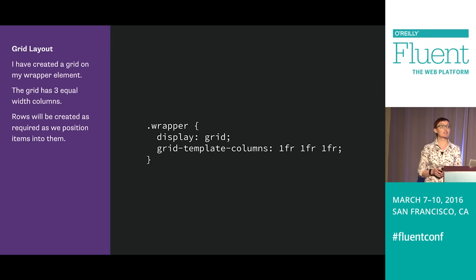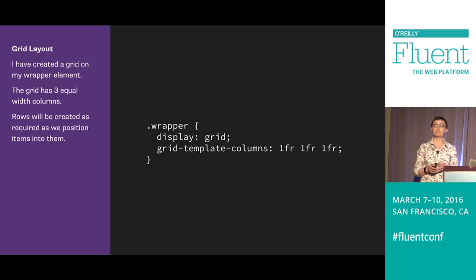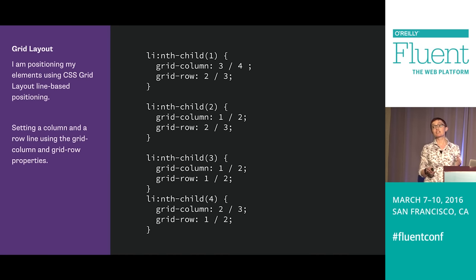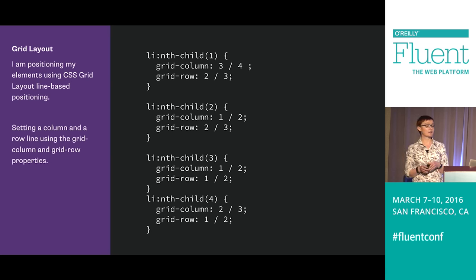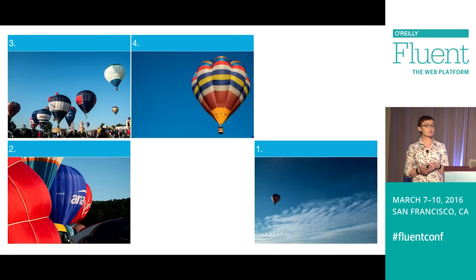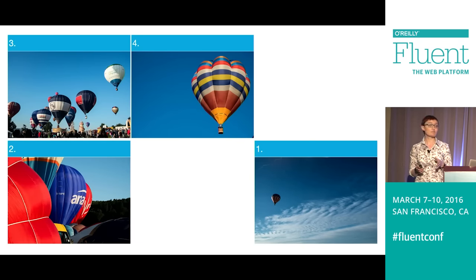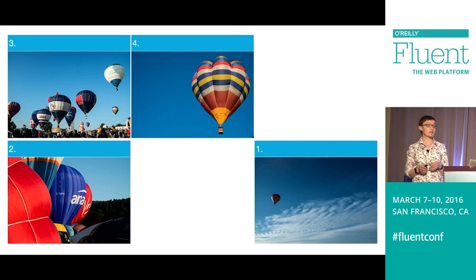CSS Grid gives us the power to change the order of elements in not one, but two dimensions. I've got a parent element set to display grid, and I'm setting up a three-column grid. I'm positioning these items using CSS Grid Layout — grid-column and grid-row properties. The value before the forward slash is the line the content starts on, and the value after is the end line. And that lets us position items around the grid, both in columns and in rows. The constraint is that grid items, like flex items, need to be a direct child of the element that's become a grid container.